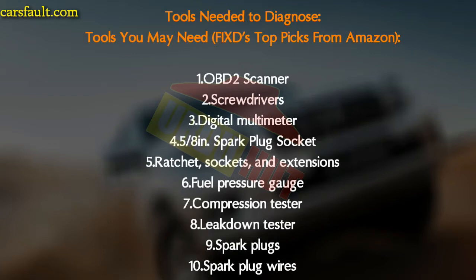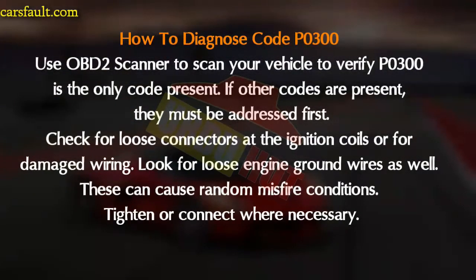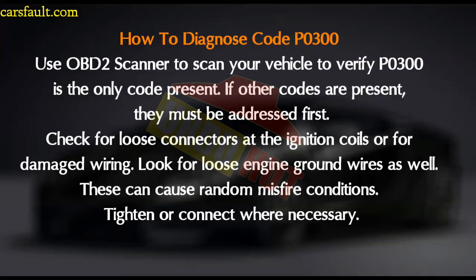To diagnose the P0300 code, use an OBD2 scanner to scan your vehicle and verify that P0300 is the only code present. If other codes are present, they must be addressed first. Check for loose connectors at the ignition wires or for damaged wiring. Also look for loose engine ground wires, as these can cause a random misfiring condition. Tighten or reconnect wires as necessary.